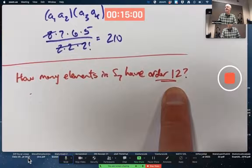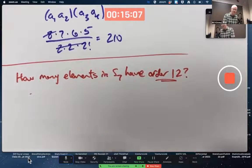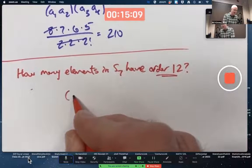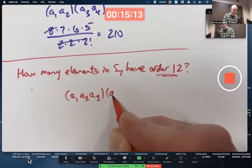How else can that happen besides one of length 12? You have lengths 3 and 4. One of length 3 and one of length 4.